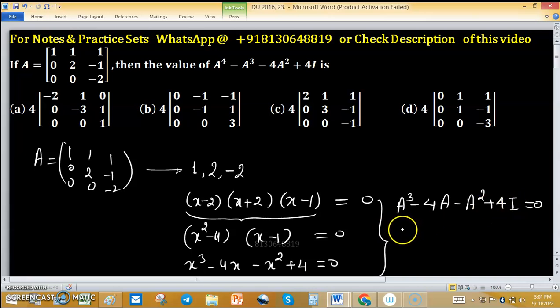Now we need to find A⁴ - A³ - 4A² + 4I. Multiply by A because no eigenvalue is 0, so it is an invertible matrix.